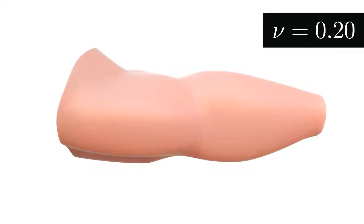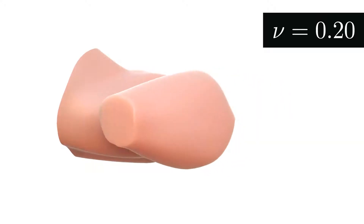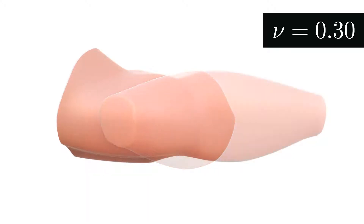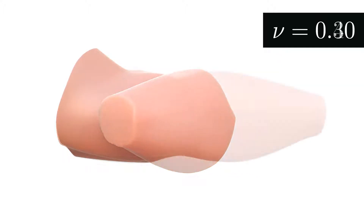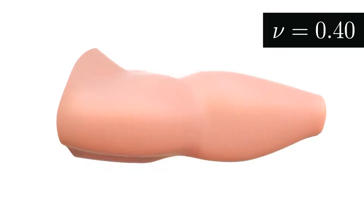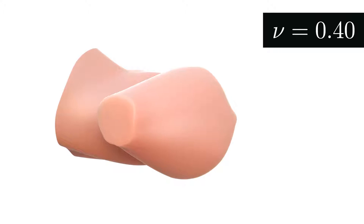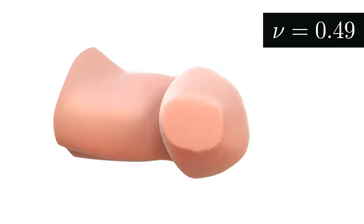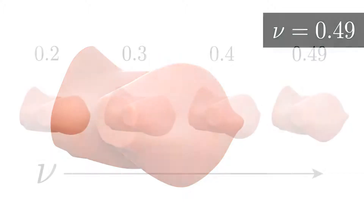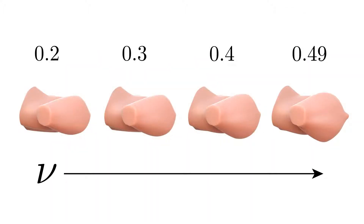Our stable Neohookian model behaves well in settings that require good volume behavior with aggressive Poisson's ratios. To explore the importance of volume conservation in flesh animation, we simulate a closing arm under progressively larger ratios. Notice that we only obtain convincing bulging effects when we approach a ratio of one-half, underscoring the need for a model that behaves well at large Poisson's ratios.